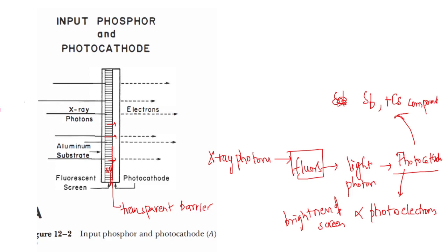To summarize the input side: X-ray photons pass through the aluminum substrate into the fluorescent screen. The fluorescent screen produces light which goes to the photocathode. The photocathode emits electrons. The CsI produces light proportional to the intensity of the X-ray beam, and the photoelectrons emitted are directly proportional to the intensity of that light.